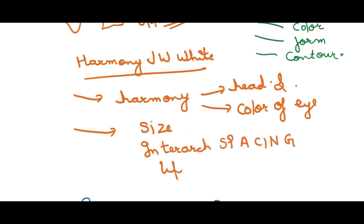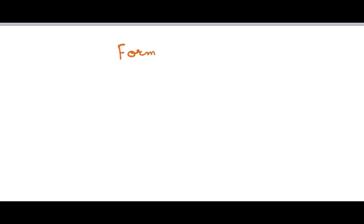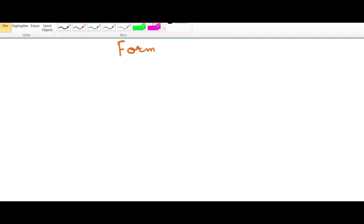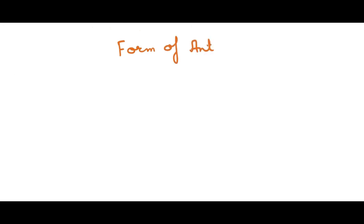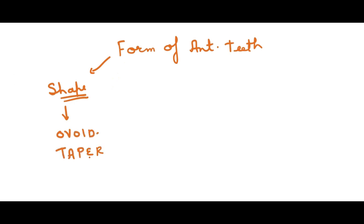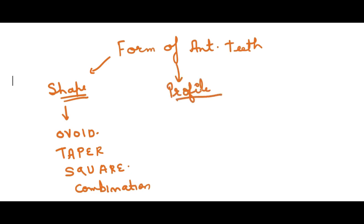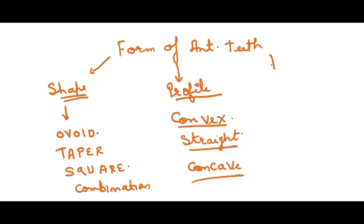The form or outline of the anterior teeth can be determined using the following factors: the shape of the patient's face, the patient profile, and the dentogenic concept. Williams described four facial forms: ovoid, tapering, square, or a combination of these. The patient may have a convex, straight, or concave profile, and the labial form of the tooth should match — straight for a straight profile, convex for a convex profile.